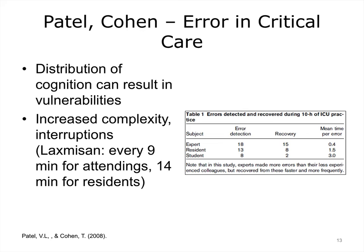Critical care is a complex environment in which clinicians are interrupted frequently. Studies by Laxmisan showed that attendants were interrupted every 9 minutes and residents were interrupted every 14 minutes. Her study also showed that a distinguishing feature of medical expertise is that the greater the expertise, the shorter the time to detection and recovery from error. Experts had a mean time of recovery from error of 0.4 minutes, while residents took 1.5 minutes and students 3 minutes. Experts made more errors but recovered from them faster and more frequently.